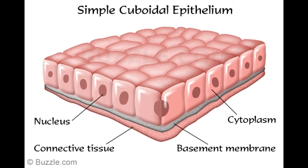All the cells are directly attached to a thin layer called the basement membrane, which is placed on a connective tissue. The cell membranes may not be visible in cases where they merge with each other, called interdigitation. In some cases, cuboidal cells may have small projections called microvilli at the top.